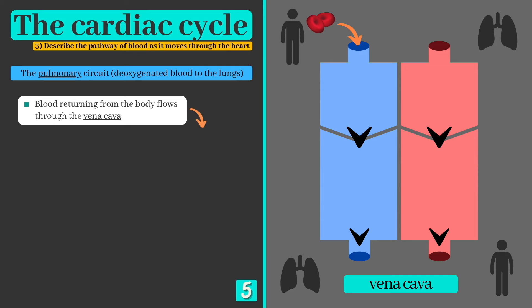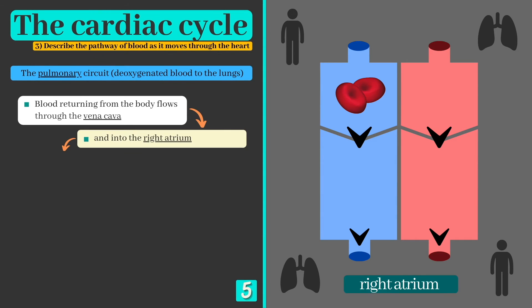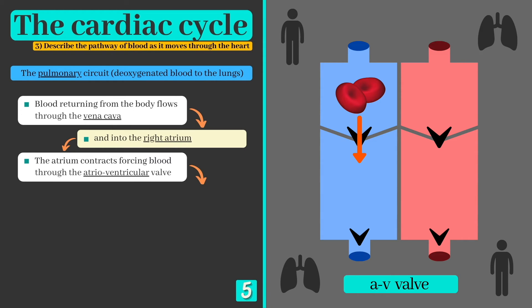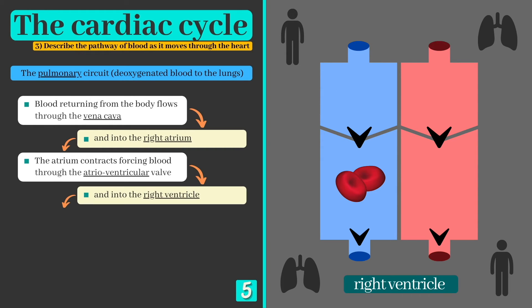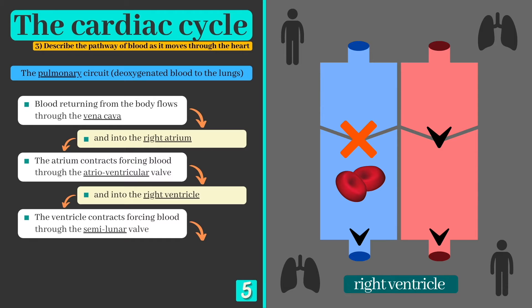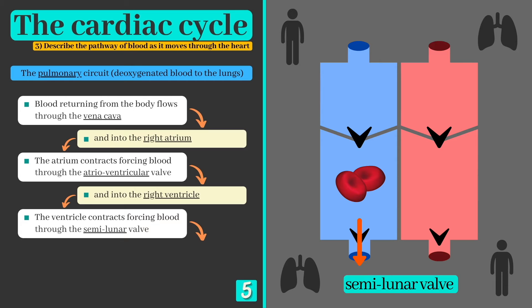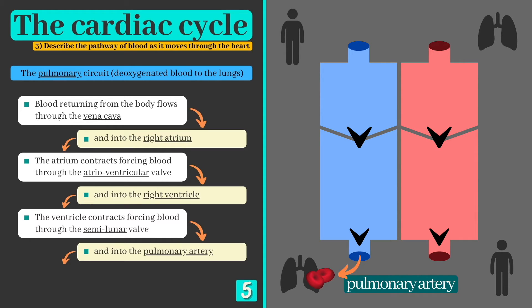The cycle begins as deoxygenated blood returns to the right side of the heart having released its oxygen into the body's tissues. It flows through the vena cava and into the right atrium, gradually filling the chamber. Once full, the atrium contracts forcing blood downwards through the atrioventricular valve and into the right ventricle. Almost immediately the ventricle contracts, forcing the valve to close — preventing blood from flowing back into the atrium — and blood rushes through the semilunar valve into the pulmonary artery, which directs it towards the lungs.